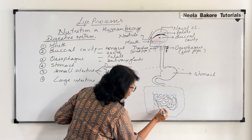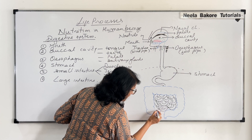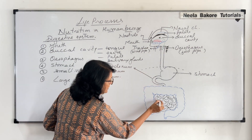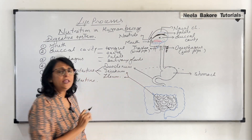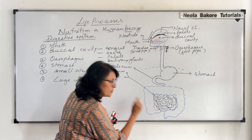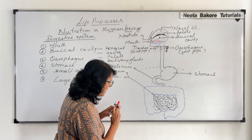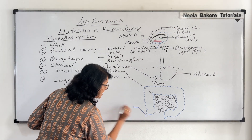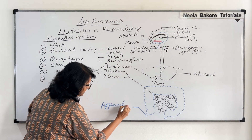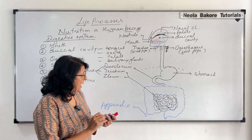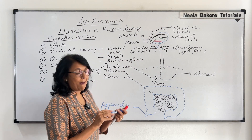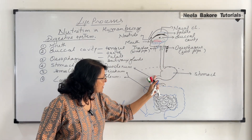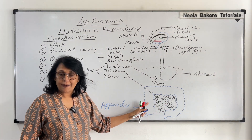The small intestine opens into the large intestine. The first part of the small intestine connected here is the duodenum, followed by the jejunum and ileum — the highly coiled portion. At the junction where the small intestine opens into the large intestine, there is a tiny finger-like structure called the appendix, which in our case is a vestigial structure. We eat, it enters the buccal cavity, goes to the esophagus, into the stomach, then to the duodenum, small intestine, and large intestine.